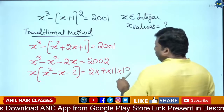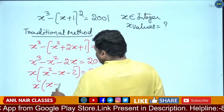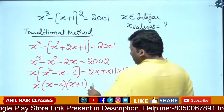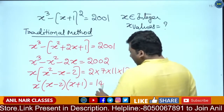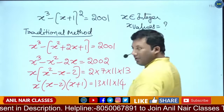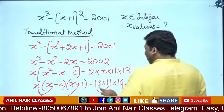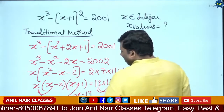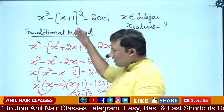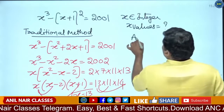So this becomes x into (x square minus x minus 2) equals 2002. Factoring 2002: it is 2 into 7 into 11 into 13. This factors as x into (x minus 2) into (x plus 1) equals 14 into 11 into 13. Comparing factors: x minus 2 decreased by 2, x plus 1 increased by 1 from 13 to 14, so x equals 13. This is the traditional method.